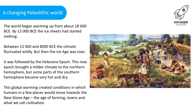The world began warming up from about 18,000 BCE. By 13,000 BCE the ice sheets had started melting. Between 12,000 and 8,000 BCE, the climate fluctuated wildly, but then the ice age was over. It was followed by the Holocene epoch, which brought a milder climate to the Northern Hemisphere, though some parts of the Southern Hemisphere became very hot and dry. This global warming created conditions in which humans in a few places would move towards the New Stone Age — the age of farming, towns and what we call civilisation.